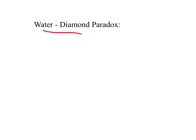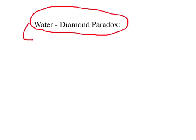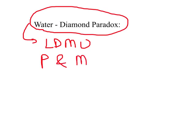Now there is a question that baffled many philosophers — the water-diamond paradox. Water is considered essential for living and yet we pay a lower price for water compared to diamonds. Diamonds are non-essential for most of us and yet we are willing to pay a much higher price for them. The resolution is based on the law of diminishing marginal utility and the link between price and marginal utility.